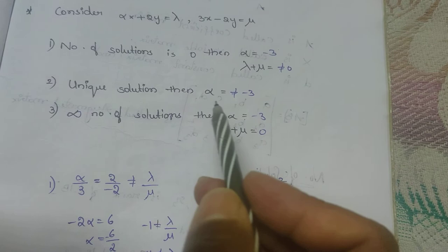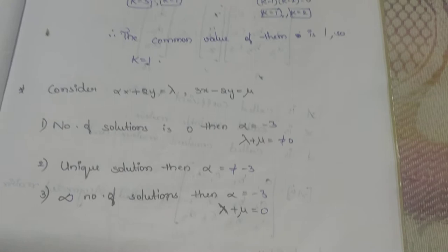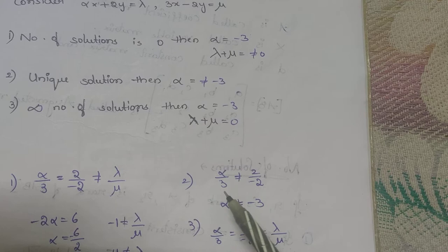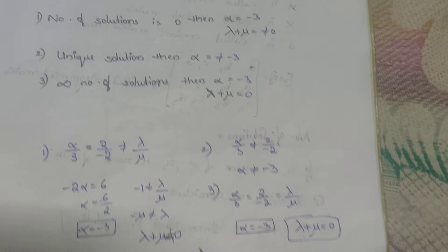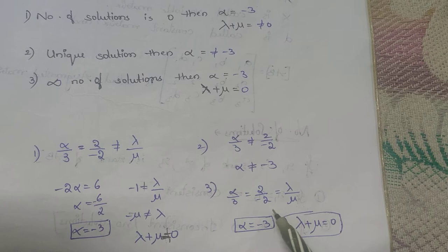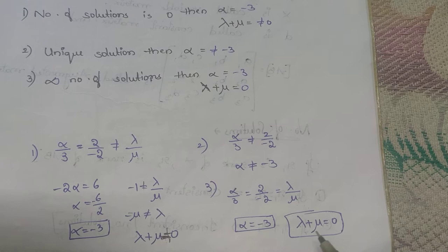For unique solution: a1/a2 ≠ b1/b2, which gives α ≠ −3. For infinite number of solutions: a1/a2 = b1/b2 = c1/c2, so α/3 = 2/(−2) = λ/μ. This gives α = −3, and λ/μ = −1, so λ + μ = 0. Therefore for infinite solutions: α = −3 and λ + μ = 0.